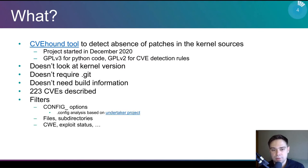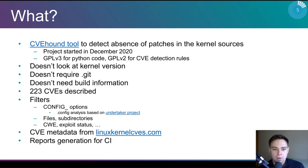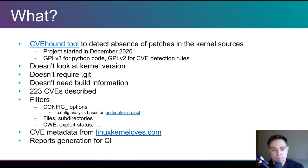Additionally, the tool supports various filters like searching subdirectories or specific files. Checking of code only enabled in a build config is also supported. Kernel config analysis is based on the undertaker project's code. I reuse CVE metadata from linuxkernelcves.com for information like CWE and CVSS scores. It's very hard work to collect and maintain that metadata, and many thanks to the project. Not so long ago, I also added report generation in JSON for CI systems.